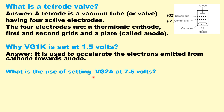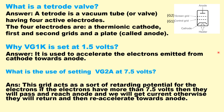What is the use of setting Vg2a at 7.5 volts? This grid acts as a retarding potential for the electrons. If the electrons have more than 7.5 volts of energy, they will pass through and reach the anode, and we will get current; otherwise they will return and then re-accelerate towards the anode.